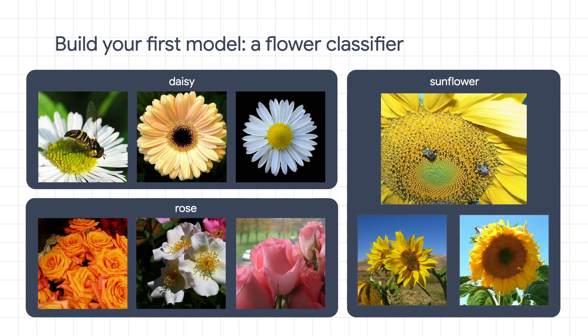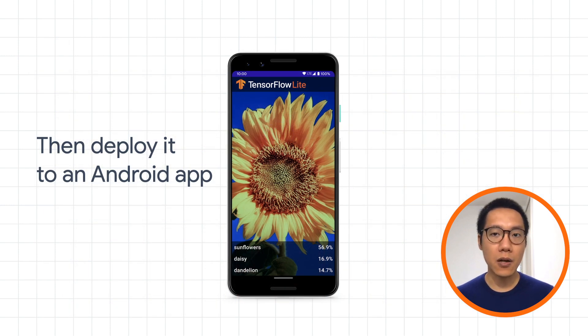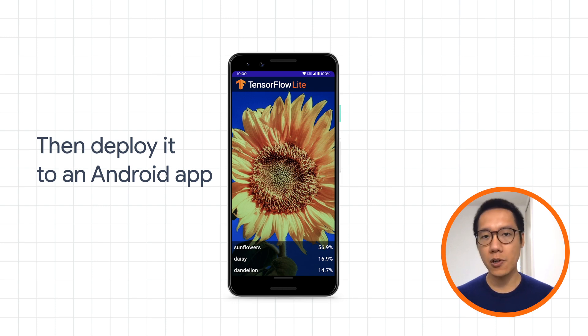We'll do a hello world example of on-device machine learning: building an image classification model. In this example, we'll use a flower dataset which contains five different types of flowers — daisy, rose, sunflower, and so on. We'll train an image classifier that can recognize these flowers, and then deploy it to an Android app so that our app will be able to recognize the flowers that you are pointing the phone camera at.